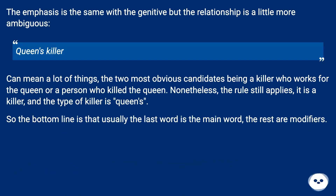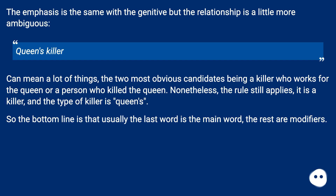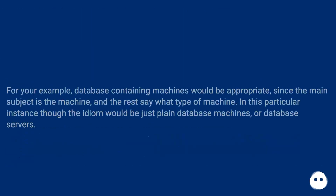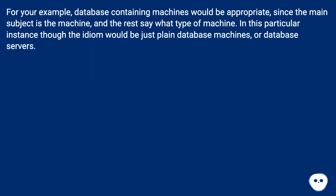The emphasis is the same with the genitive, but the relationship is a little more ambiguous. Queen's killer can mean a lot of things — the two most obvious candidates being a killer who works for the queen, or a person who killed the queen. Nonetheless, the rule still applies: it is a killer, and the type of killer is queen's. So the bottom line is that usually the last word is the main word and the rest are modifiers. For your example, database containing machines would be appropriate, since the main subject is the machine and the rest say what type of machine. In this particular instance though, the idiom would be just plain database machines or database servers.